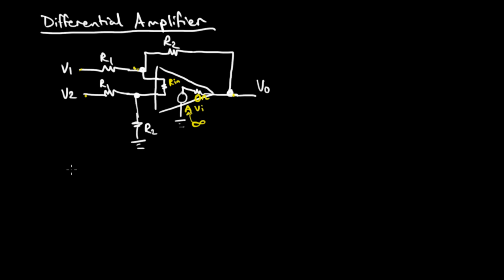Let's say that R1 equals R2, then that implies V0 equals V2 minus V1. That would be just the difference of the input voltages, and that is a differential amplifier.